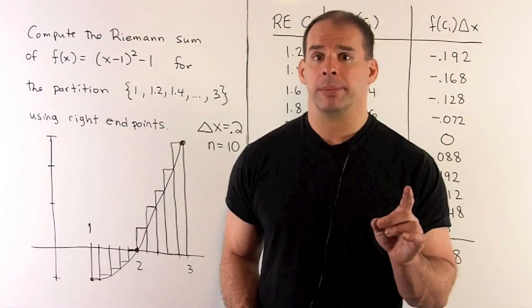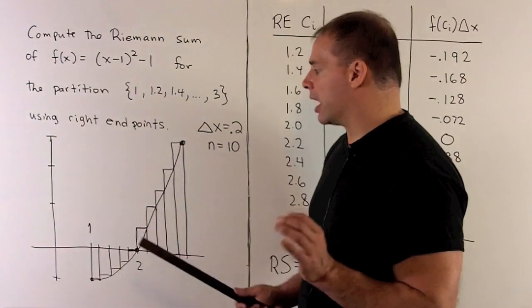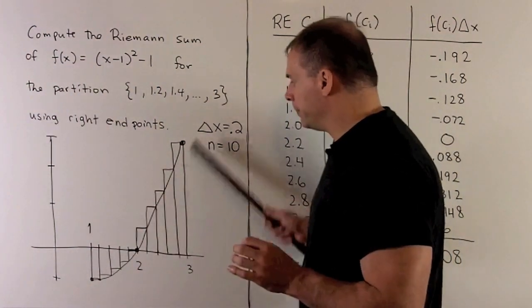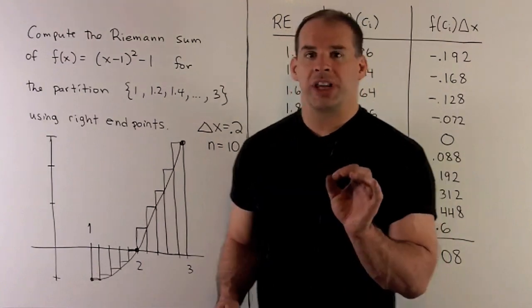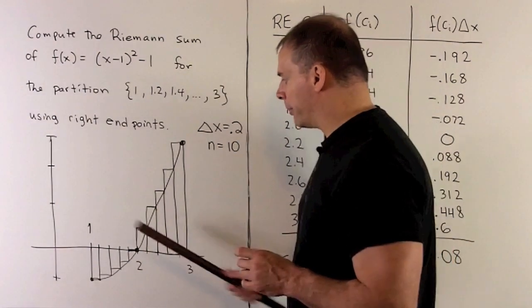So first, let's draw our picture. Now, our function is going to be a parabola facing up. So we draw that in. We're interested in the interval going from 1 to 3, so we mark those off. Our endpoints are 1 and 3.